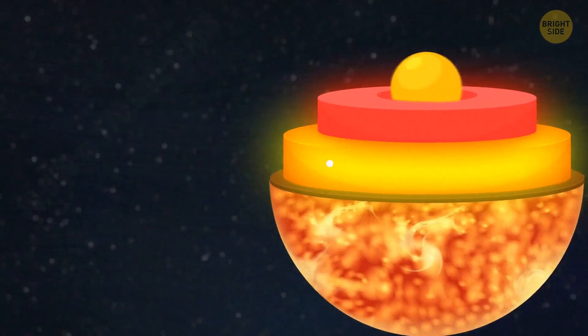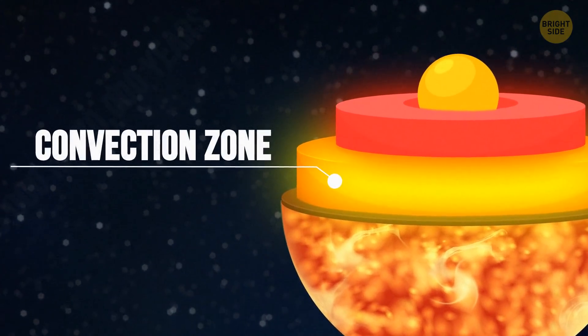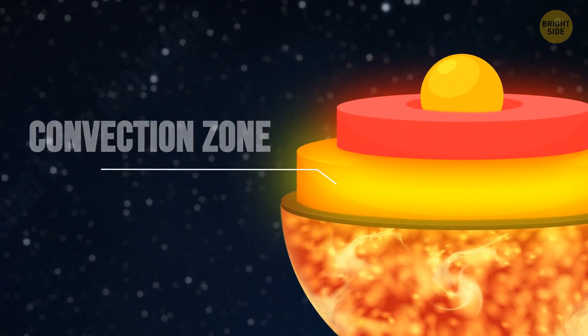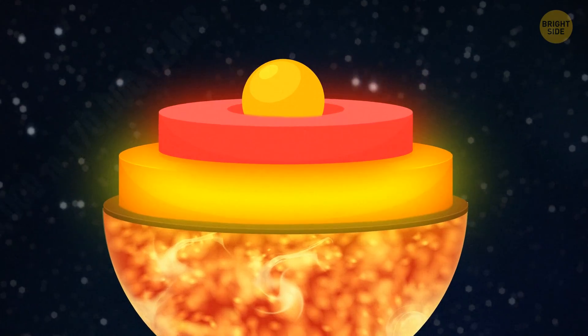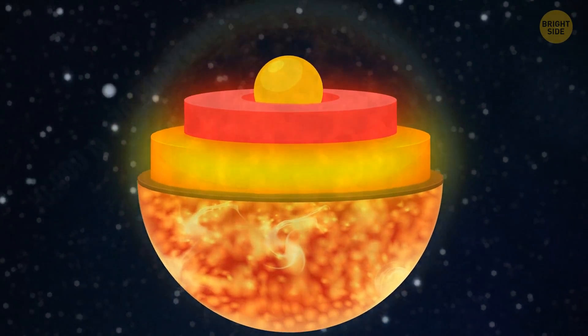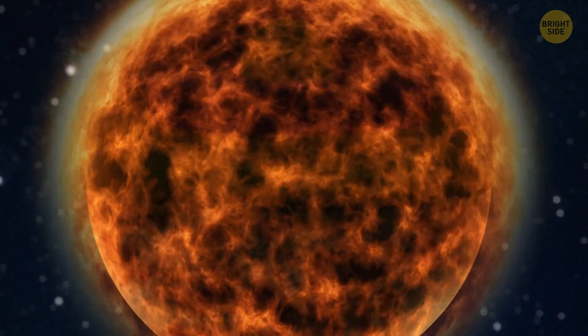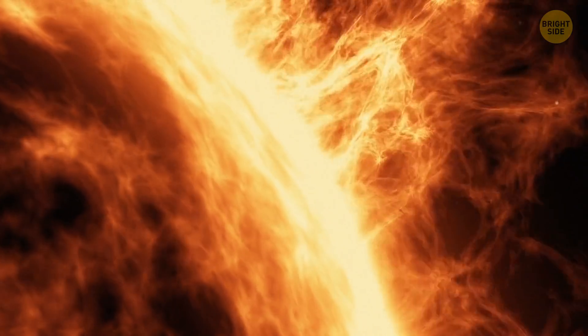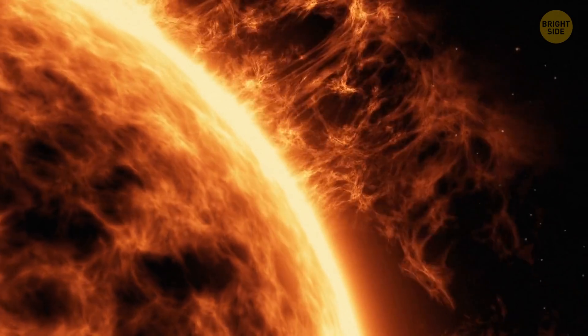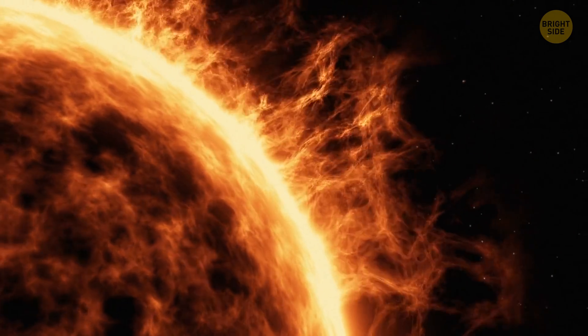Then there's the convection zone. This is what's considered to be the surface of the sun. But it's not a solid surface. It's an ocean of hot plasma. It looks like a bee honeycomb. That's because the heated plasma rises from the lower layers, creating something like mini geysers. And while it's still hot in the middle of those geysers, their edges cool down, creating an amazing pattern on the sun's surface.